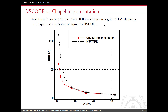Here we present a comparison between the two implementations. We ran 100 iterations on a simple 2D airfoil with 1 million grid elements, comparing overall computational time in seconds. In red is the Chapel implementation and in black is the C implementation. As you can see, the Chapel implementation is at least equal or even faster than the C implementation.